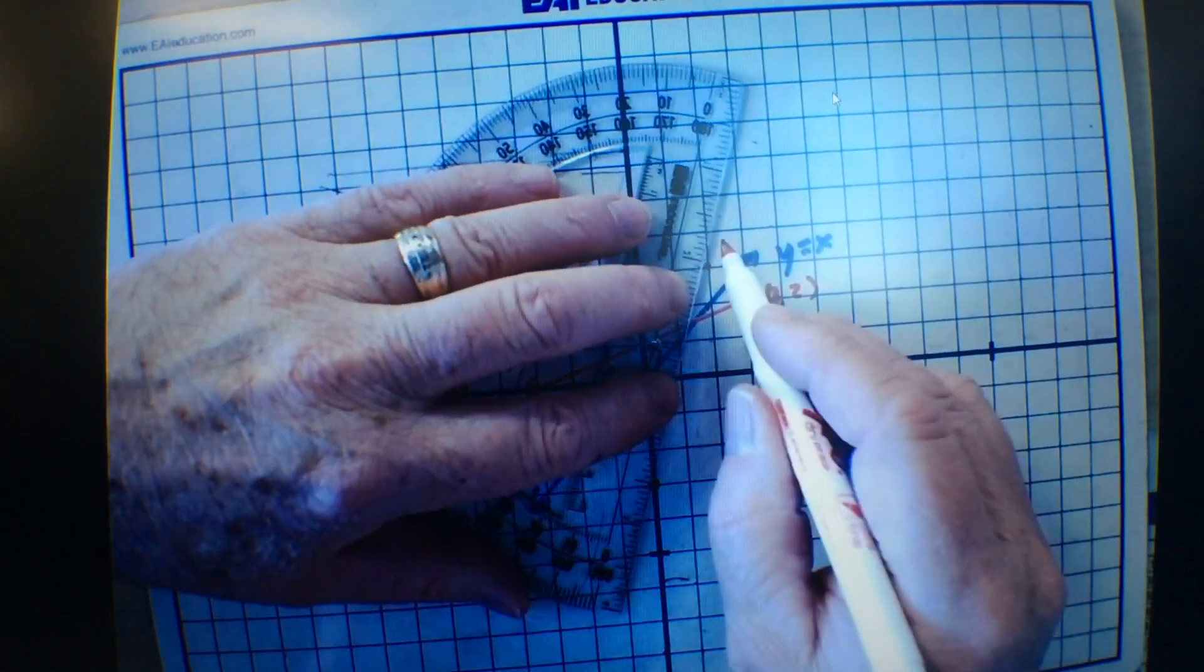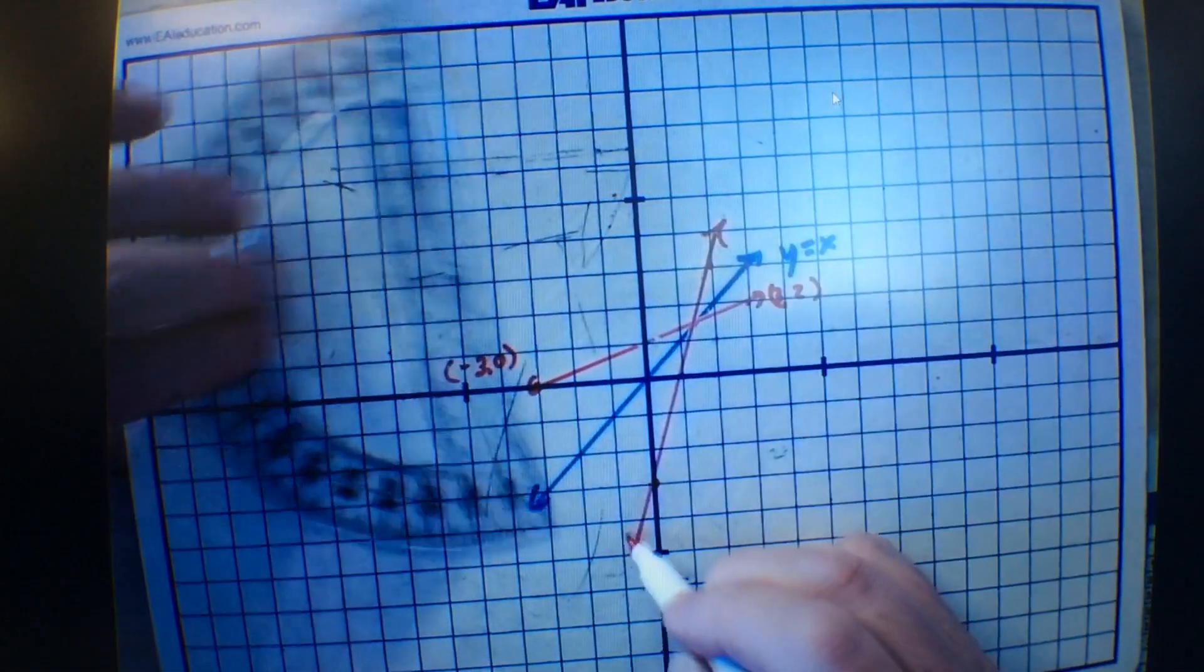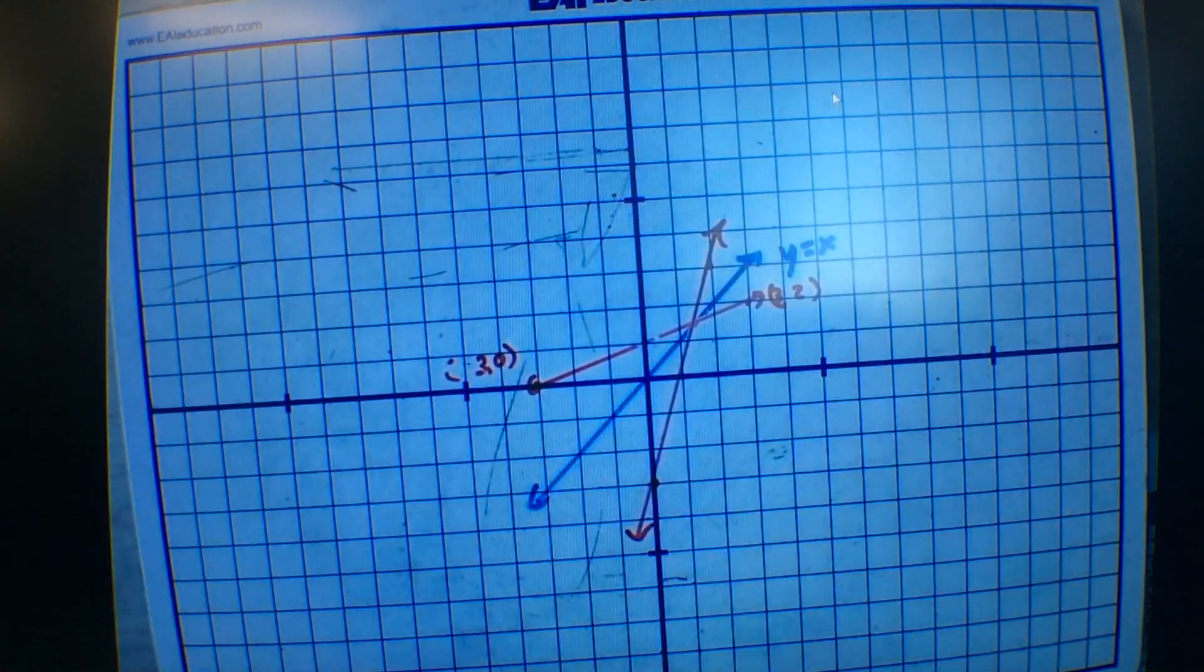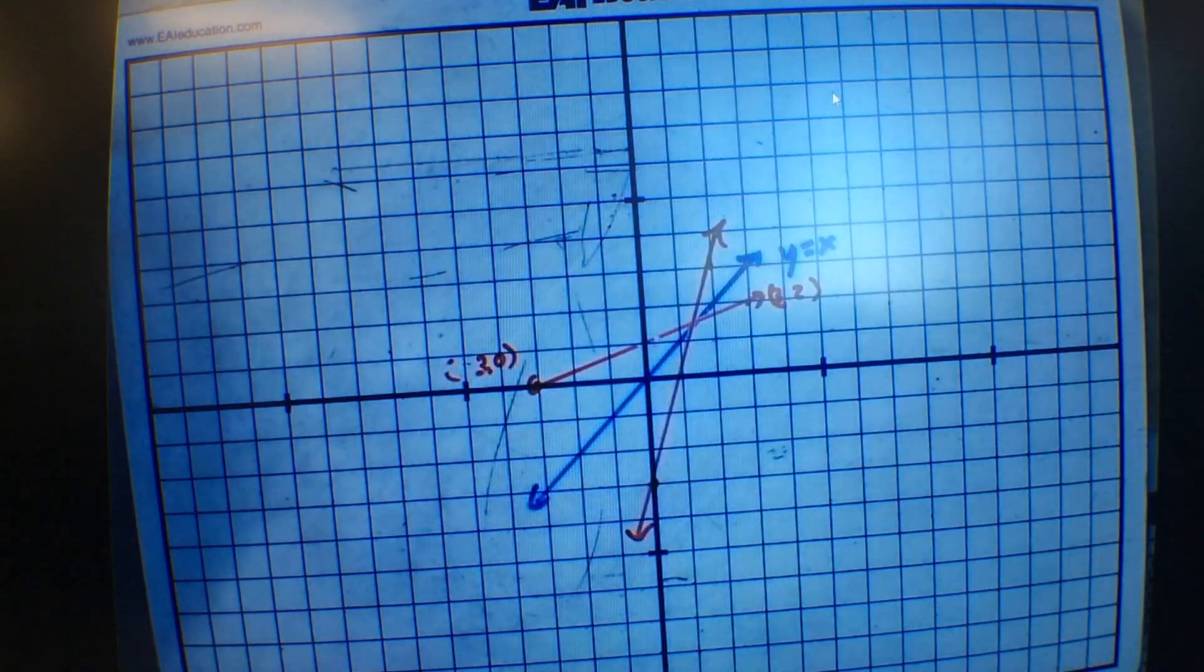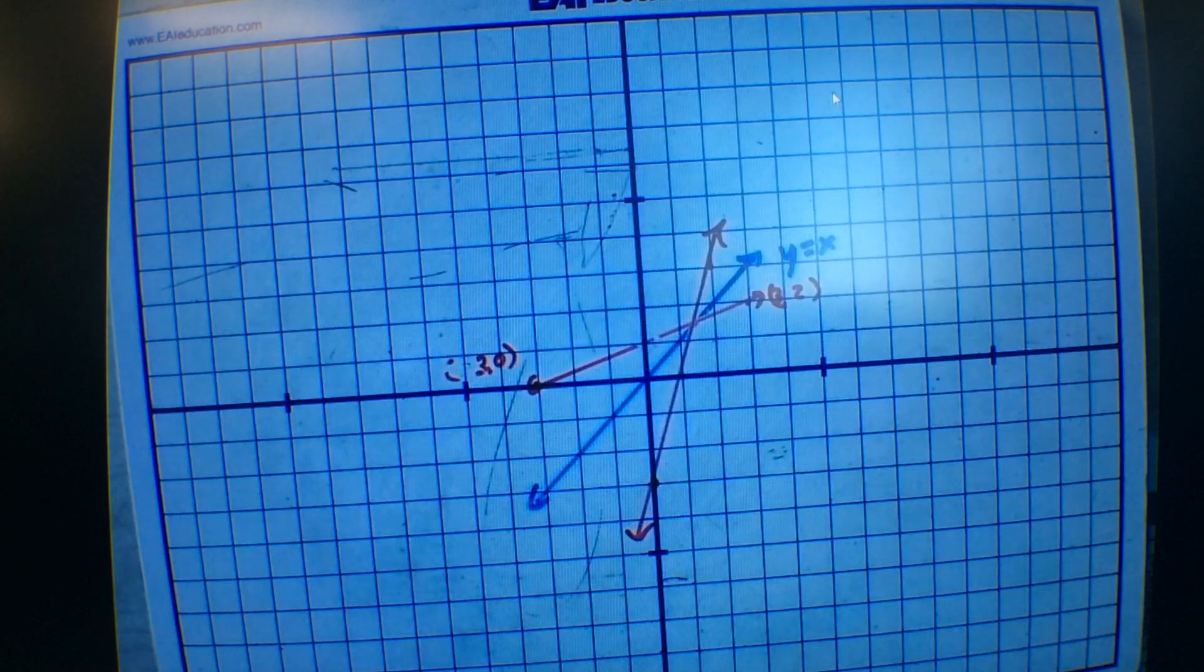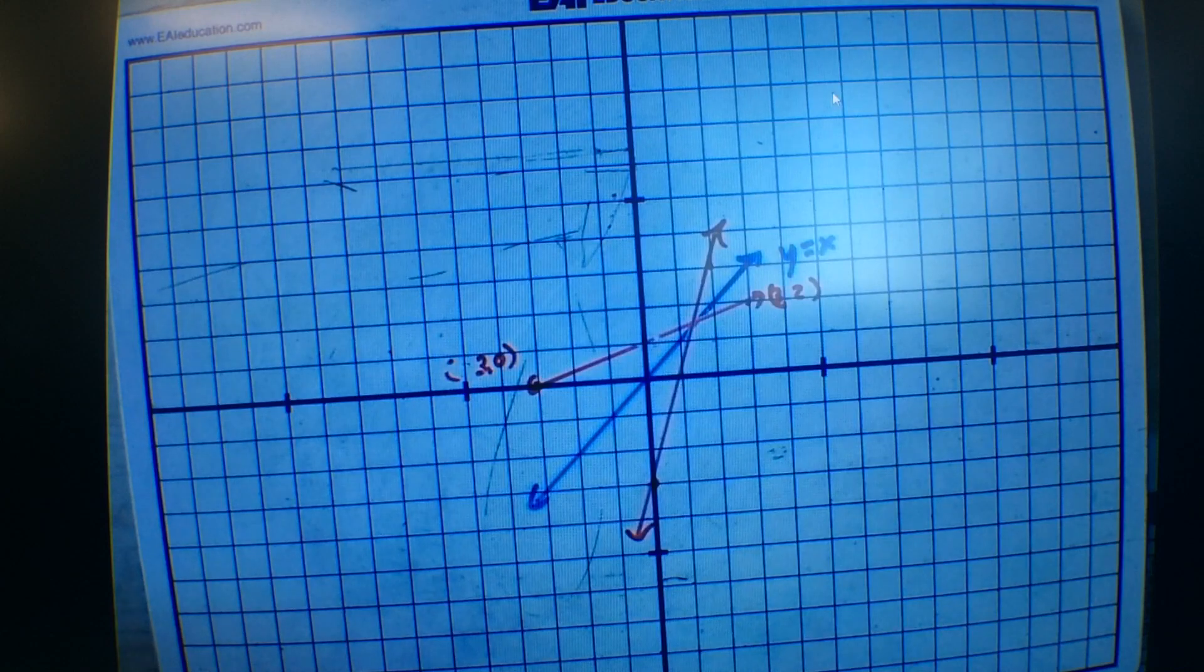Here's a case, Jackson, where the lines are not parallel, are they? But they still are reflected over this blue line. Okay? That's kind of interesting, isn't it? All right? Sometimes they're parallel. Sometimes they're not. Okay? Questions? Comments? All right?